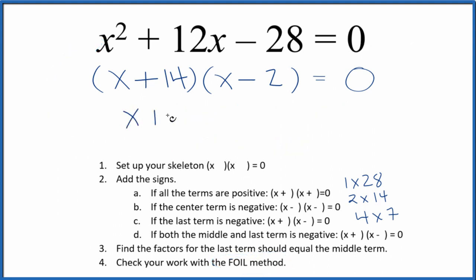So we could say x plus 14 equals 0. Add a negative 14 to both sides, x equals negative 14. Over here, x minus 2 equals 0, so we add a positive 2 to both sides, x equals 2.